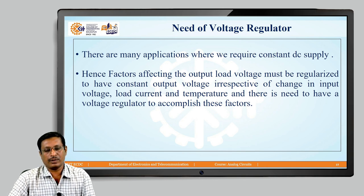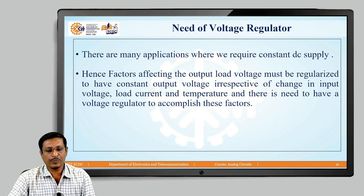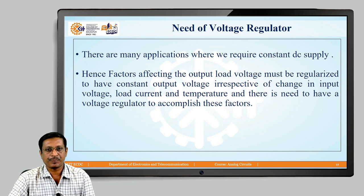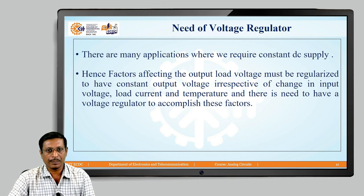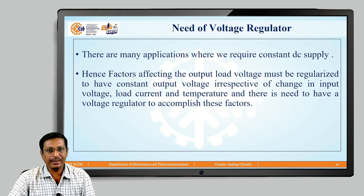From this, it is observed that even by using a rectifier and filter circuit, it is not possible to completely remove the AC contents — that is, ripple. This is why there is a need for a voltage regulator in day-to-day domestic or industrial applications. Most applications require a completely DC power supply or DC output voltage. Hence, the factors affecting the output load voltage of a power supply must be regulated so that the output remains constant irrespective of changes in input voltage, load current, and temperature. To accomplish this, we need a voltage regulator.